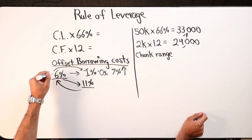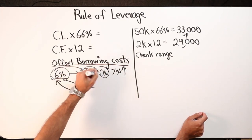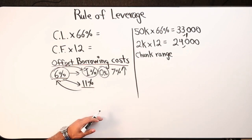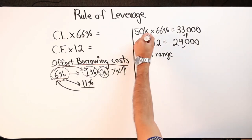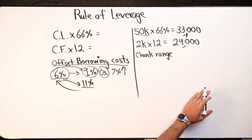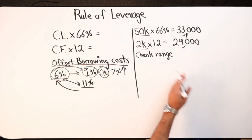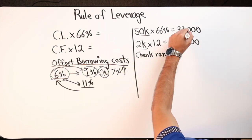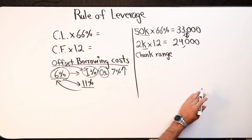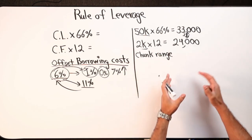How do you borrow at 6% but actually pay 1% or nothing? Let's discuss it with a quick example. Let's say you have a line of credit for $50,000 — 66% of that is $33,000. You now have a number; we're developing our chunk range. Let's say you have $2,000 in cash flow per month, times 12, that's $24,000. Your chunk range is anywhere from $33,000 to $24,000. That's just the chunk range — it doesn't mean you should automatically chunk that amount.